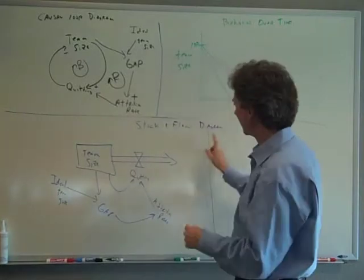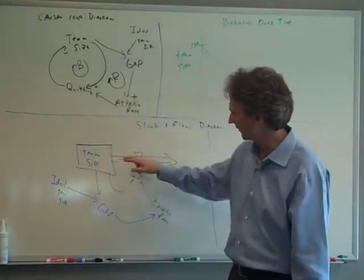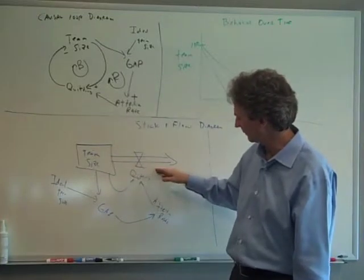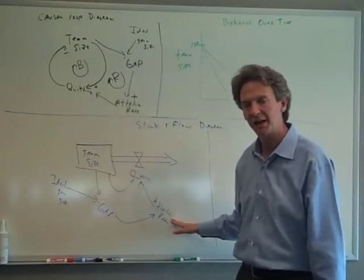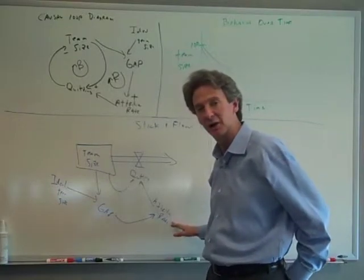What we've done is we have modeled this part of it. You've got a team size, you have people quitting at a fixed attrition rate. What we're going to do now is turn this attrition rate into a variable instead of it always being fixed.